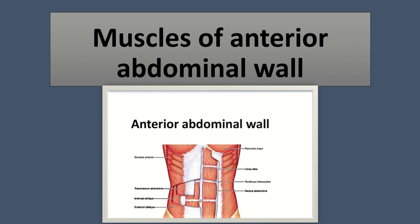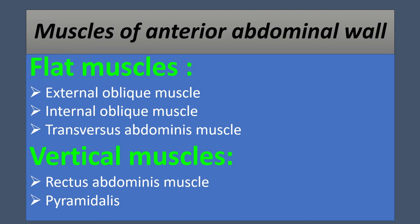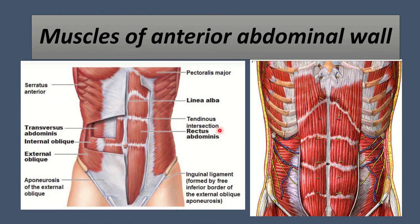The muscles of the anterior abdominal wall are divided into two groups: the flat muscles and the vertical muscles. Flat muscles are the external oblique, internal oblique, and transversus abdominis muscle. Vertical muscles are the rectus abdominis and pyramidalis. Flat muscles are three in number and vertical muscles are two in number. Here we can see the muscles of the anterior abdominal wall — the vertical muscles and some of the transverse muscles.